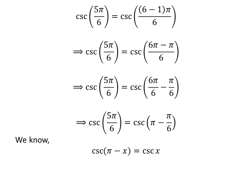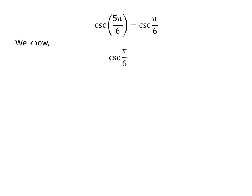We know the famous trigonometry identity: cosecant of pi minus x is equal to cosecant of x. The proof of the identity has been explained in the video appearing in the upper right corner of this video. The link of the video is also given in the description section. Application of the above identity gives us cosecant of 5 times pi upon 6 is equal to cosecant of pi upon 6. We know cosecant of pi upon 6 is equal to 2. So cosecant of 5 times pi upon 6 is equal to 2.